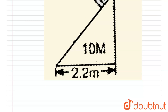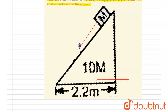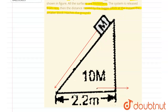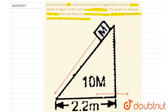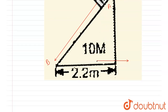So what will happen here? After some time, this wedge will move in this direction when this block comes to the bottom. So with respect to the wedge, this block will move this much. Now we have to calculate the distance moved by the wedge when the block comes from point A to point B.